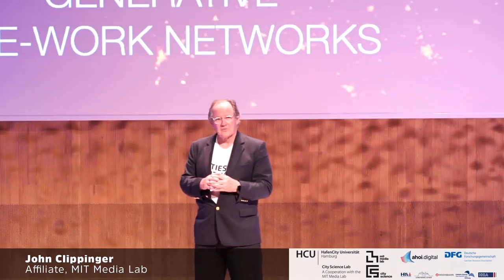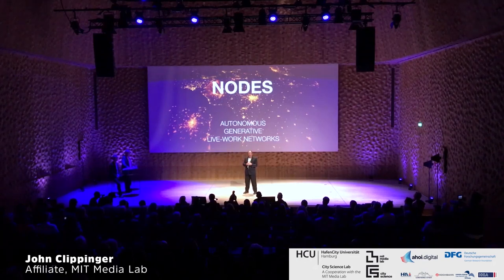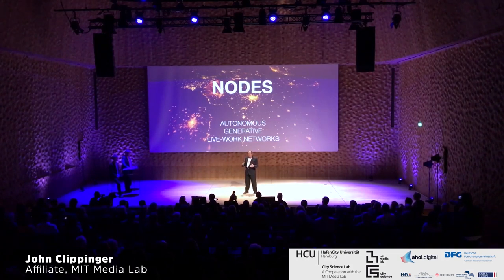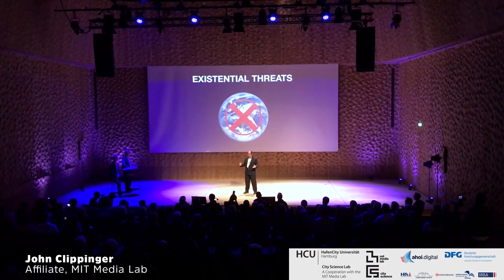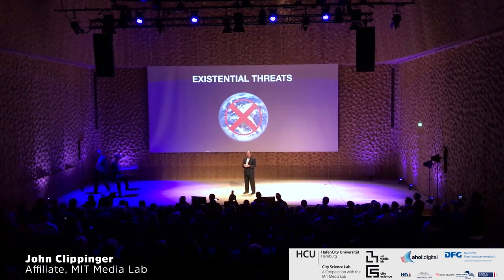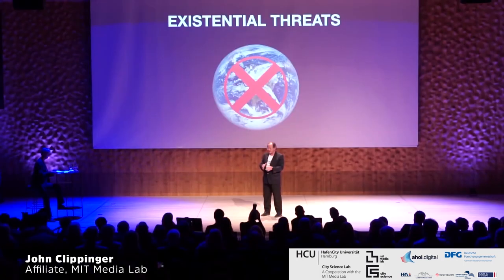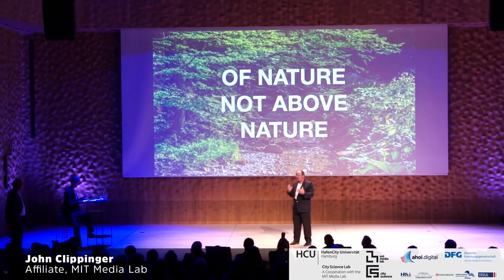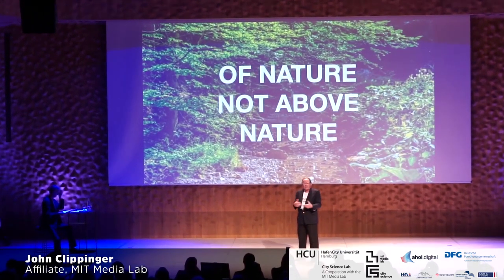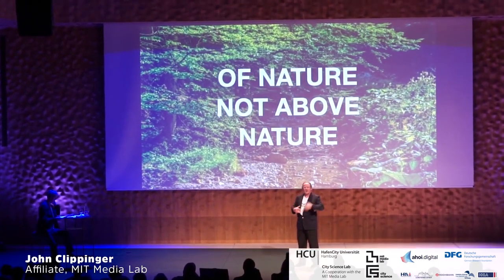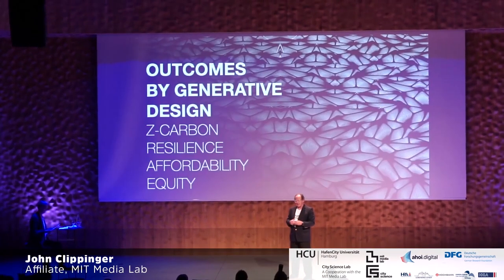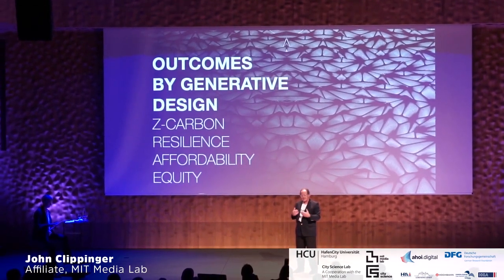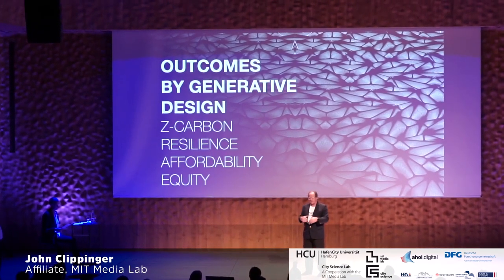What I'd like to do is talk about nodes and how to transition to bottom-up autonomous forms of organization and urbanization that are consonant with the earth. What we're confronted with is a series of existential threats. We have climate change, we have extinctions of species — all these challenges before us. The question is: how do we design something based in nature from initial principles, without extractive technology or extractive ways of organizing? How do we design around outcomes?